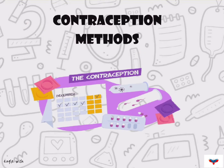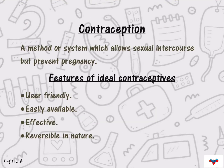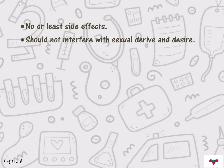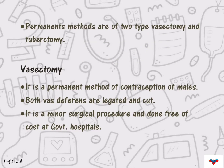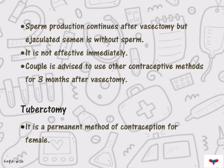After the introduction, mention about contraception and the different types of contraceptive methods. Permanent methods of contraception include vasectomy in males and tubectomy in females.